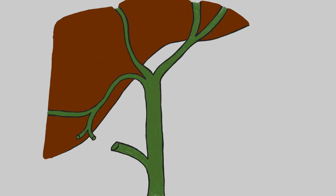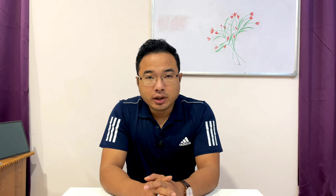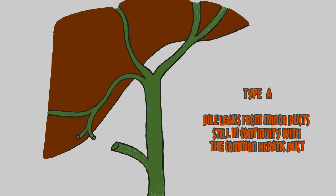In this classification, Type A is bile leaks from minor ducts which are still in continuity with the common hepatic duct. There has been some damage to a minor duct but it has not been transected or separated from the main ducts — it is still in continuity, damaged on the liver side, with some bile leak occurring.